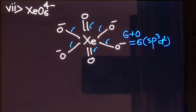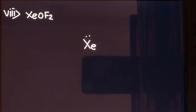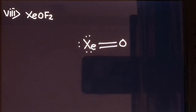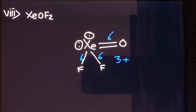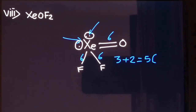The next molecule is XeOF₂. Xenon has eight outermost electrons. It forms a double bond with oxygen and single bonds with the two fluorines. Xenon has two lone pairs of electrons left. The total number of sigma bonds is three — one with oxygen, one with each fluorine — plus two lone pairs. So the steric number is five and the hybridization will be sp3d.